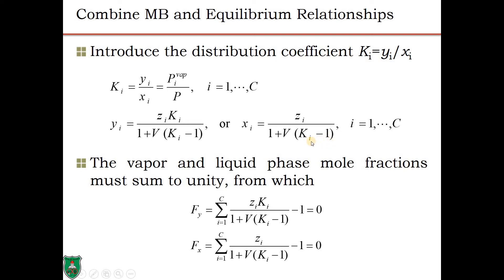Now the only unknown in these equations is V, the vapor fraction. We apply the common thermodynamic trick of summing over all Yi's or Xi's. Setting the summation of Yi equal to 1 gives: Σ[Zi·Ki / (1 + V(Ki − 1))] − 1 = 0 (called Fy). Setting the summation of Xi equal to 1 gives: Σ[Zi / (1 + V(Ki − 1))] − 1 = 0 (called Fx). Each is a single equation in the single unknown V, the vapor fraction (V/F ratio).